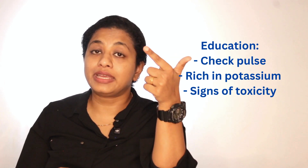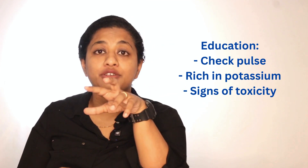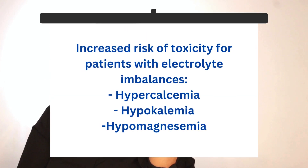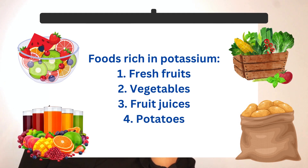Second, patients have an increased probability of developing digoxin toxicity when they have electrolyte imbalances — particularly hypokalemia, hypocalcemia, or hypomagnesemia. Encourage and educate your clients to eat foods rich in potassium, including fresh fruits and vegetables, fruit juices, and potatoes. This is another key education point pertinent to someone at home on digitalis therapy.